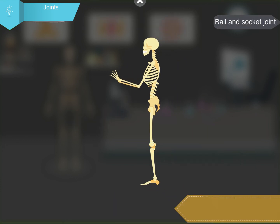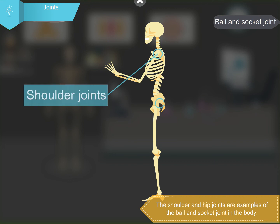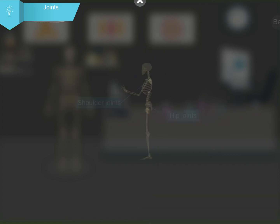The shoulder and hip joints are examples of the ball and socket joint in the body. The end of one bone is round like a ball and fits into the other bone, which is hollow like a socket. These joints allow maximum movement in all directions.